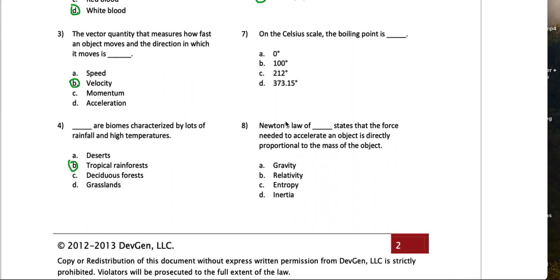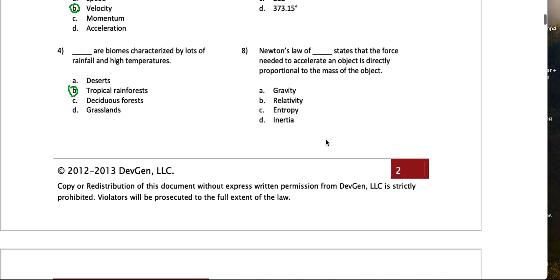Number seven, on a Celsius scale the boiling point is blank. I would say it's 100 degrees Celsius. Yeah, on a Celsius scale the boiling point is 100 degrees, which I always thought was very convenient. And then the freezing point would be zero.